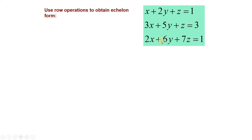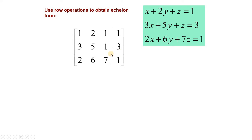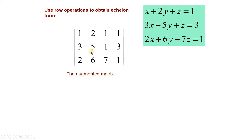We have to write the augmented matrix for this system of equations. This is the augmented matrix. These first three columns are obtained from the coefficients of the unknowns x, y, z — یہ تینوں coefficient matrix دیتا ہے۔ اور یہ جو column ہے the column of constants — اس کو ہم نے یہاں پہ لکھا ہے۔